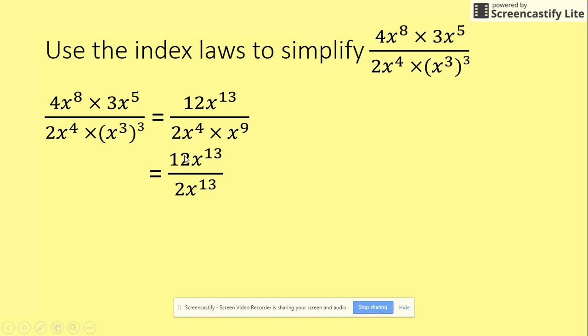So we know that 2 goes into 12 six times, and 13 take 13 gives us 0. So here we've got 6x to the power of 0. What does that actually mean? That means that we are going to multiply,